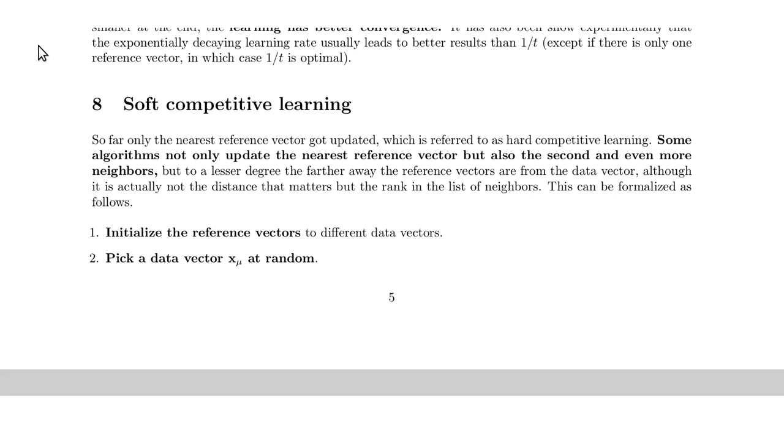So far the previous online learning rule was referred to as hard competitive learning, and this hard competitive refers to the fact that only one reference vector is modified at any given time and only one reference vector is responsible for a data point.